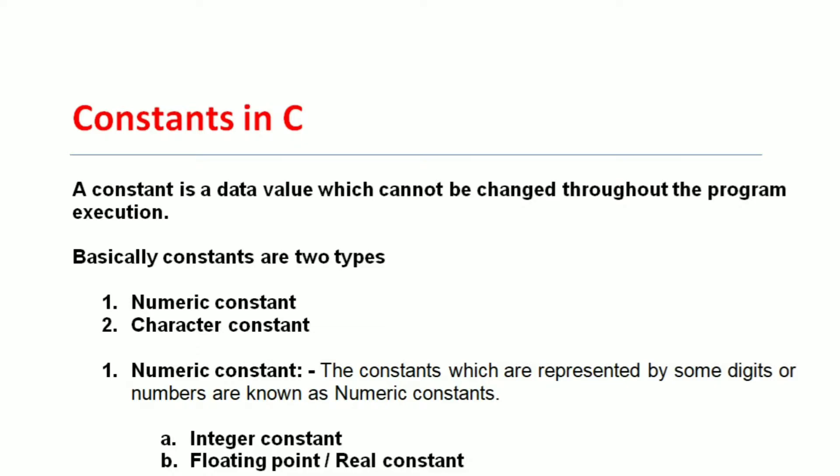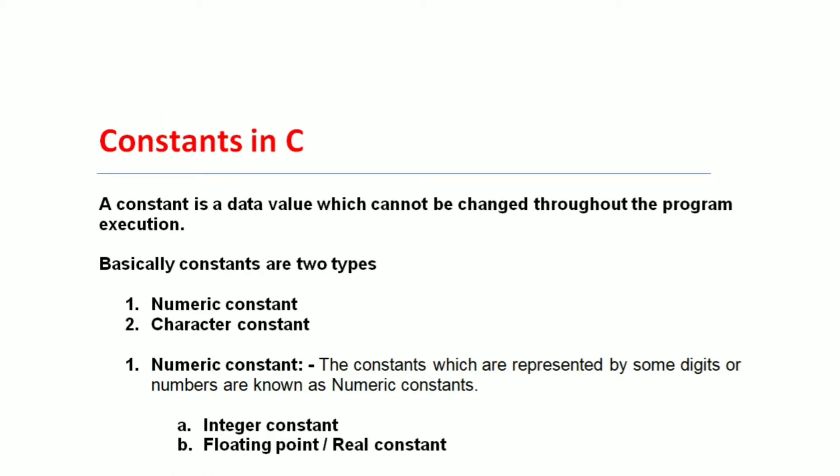Pi is a symbolic constant. Basically, constants are of two types: the first one is numeric constant, and the second one is character constant. Numeric constants are those constants which are represented by some digits or numbers — numeric constants contain only digits and numbers.